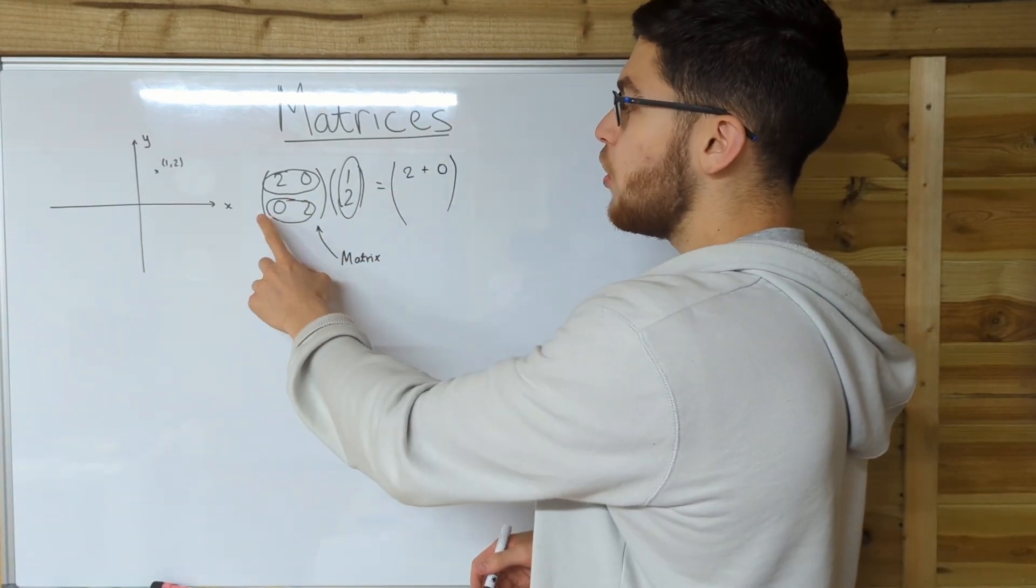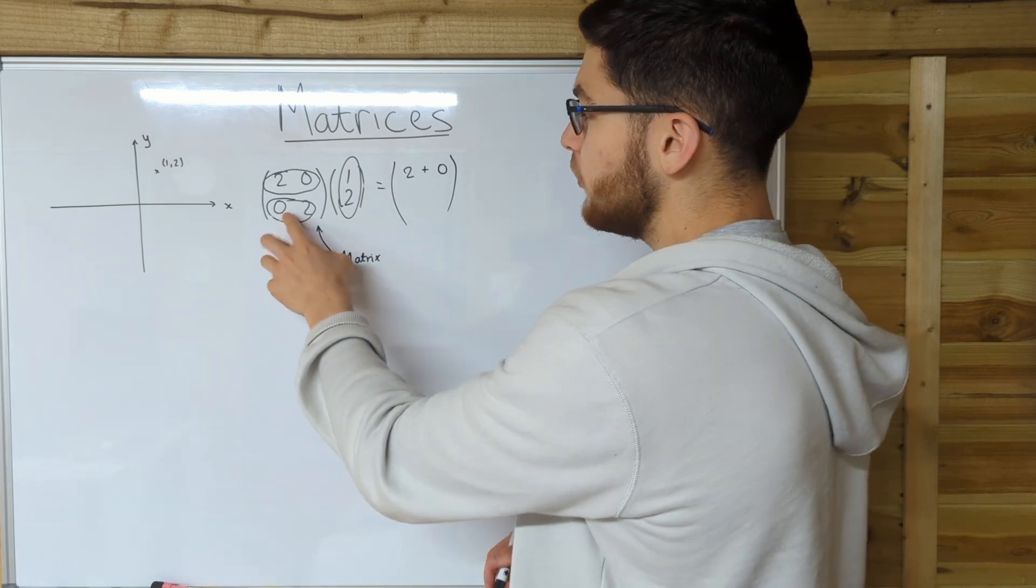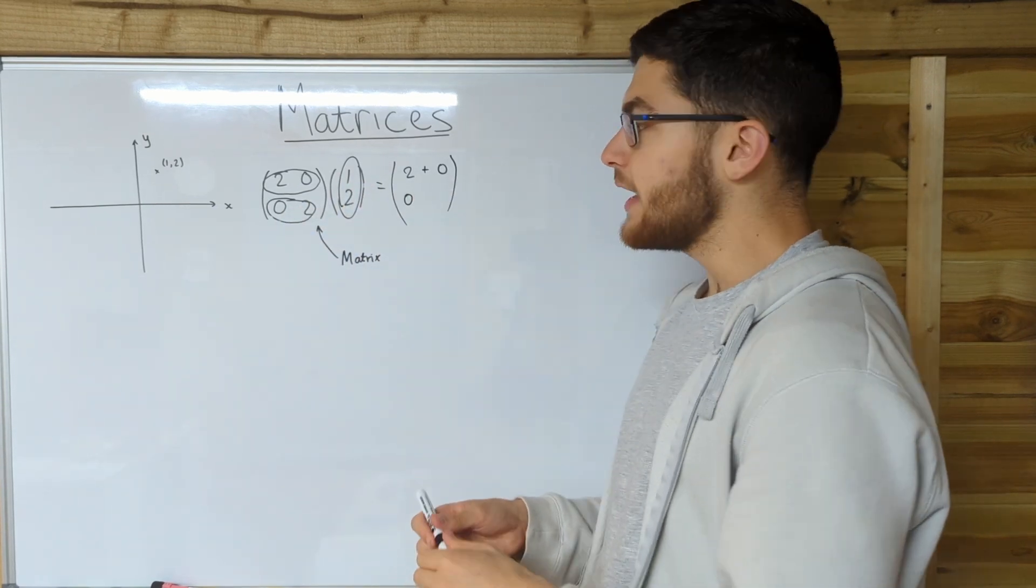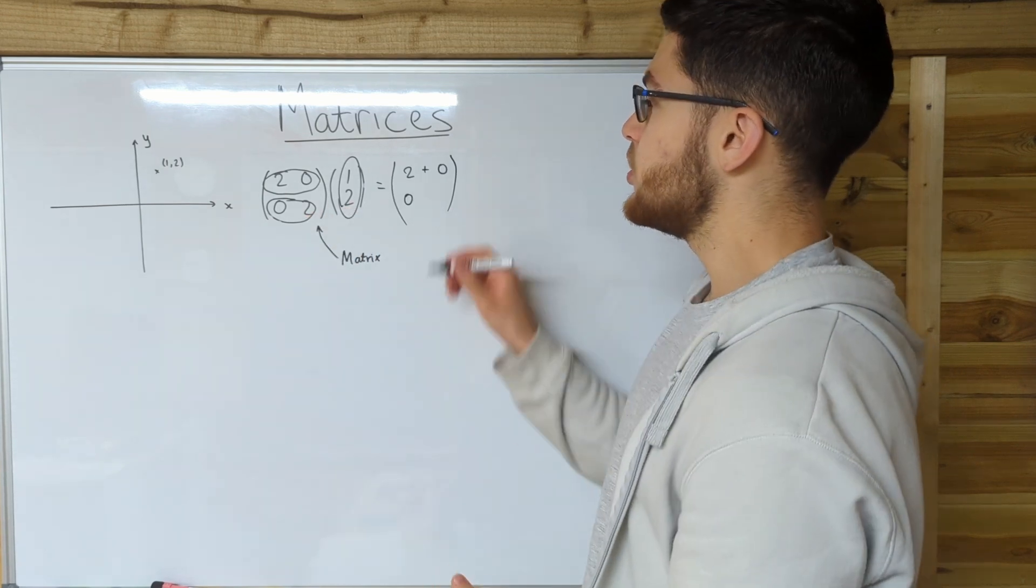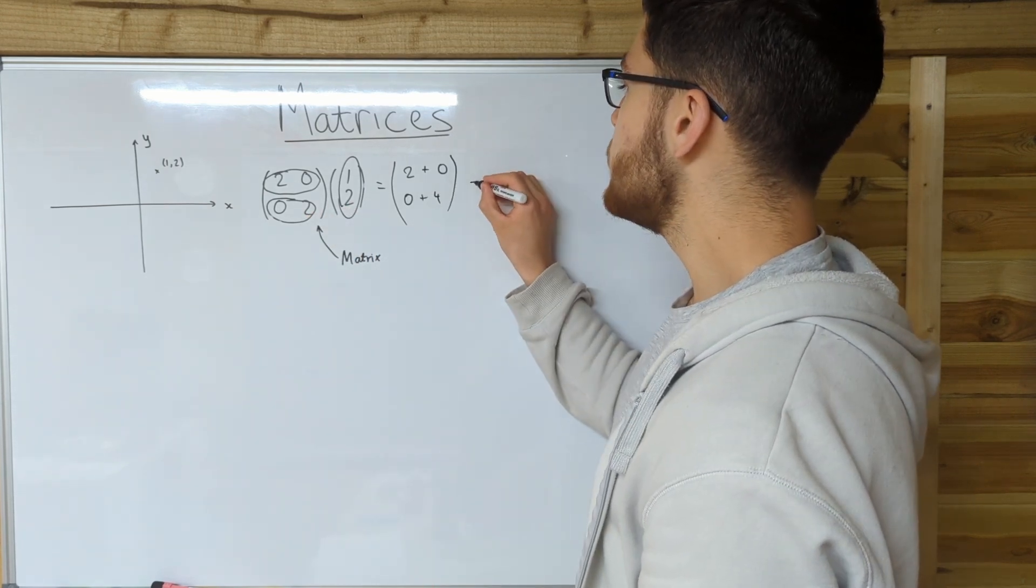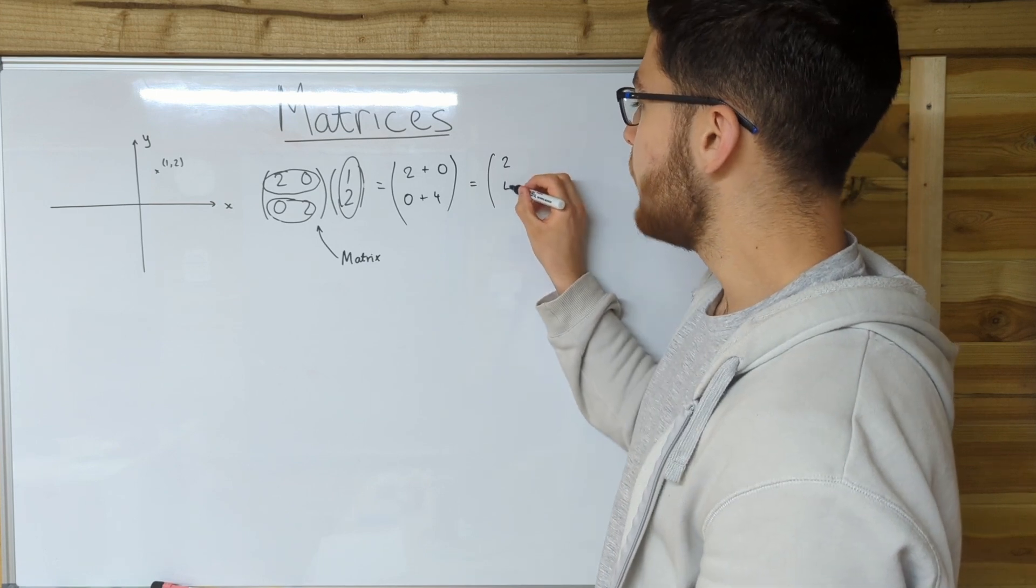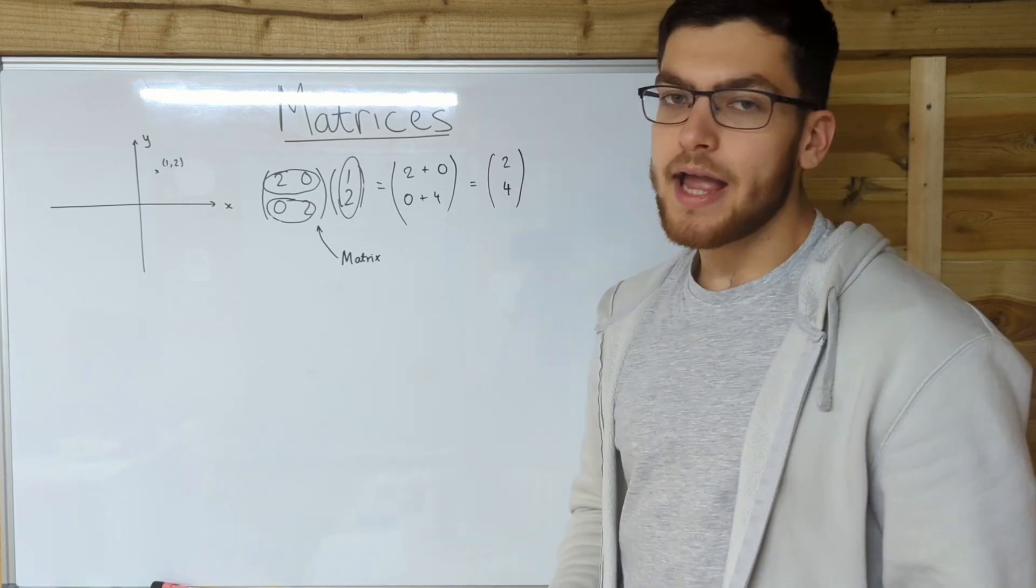Next, we're going to multiply this row by this column. So first one times the first one is 0 times 1, which is 0. And the second one times the second one is 2 times 2, which is 4. Now we're just going to simplify this matrix. 2 plus 0 is 2. 0 plus 4 is 4. And that is our answer.